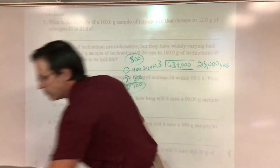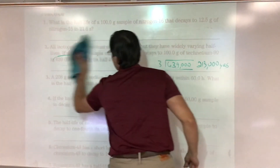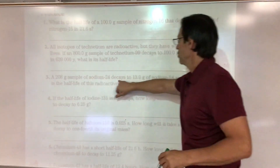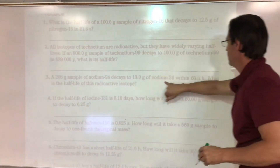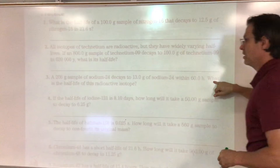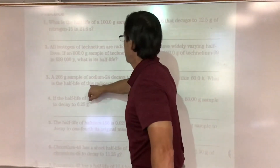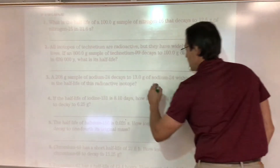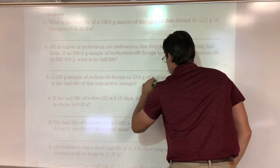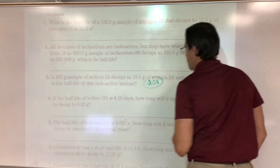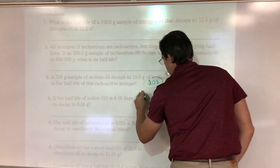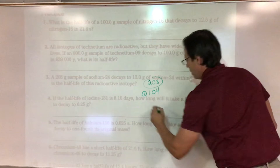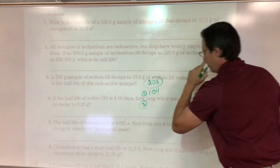Number three: a 208-gram sample of sodium decays to 13 grams within 60 hours. What is the half-life of this radioactive isotope? Starting at 208 — half of 208 is 104, then 52.